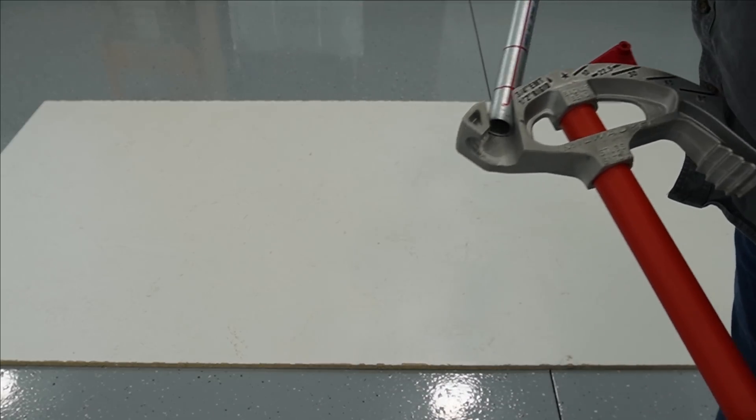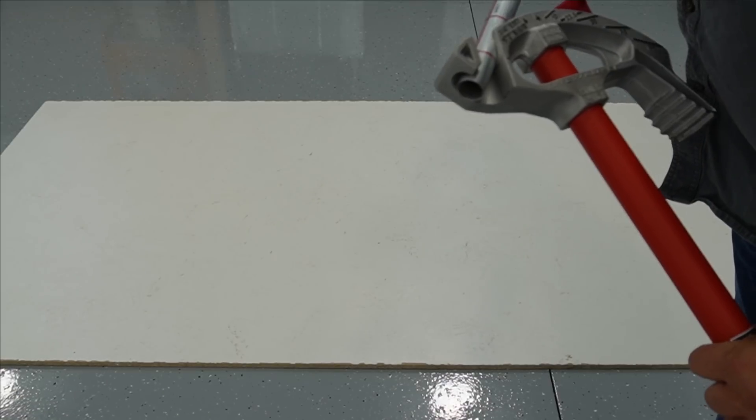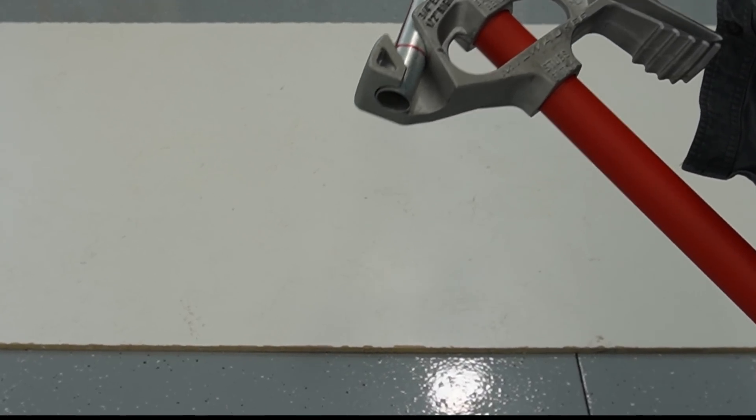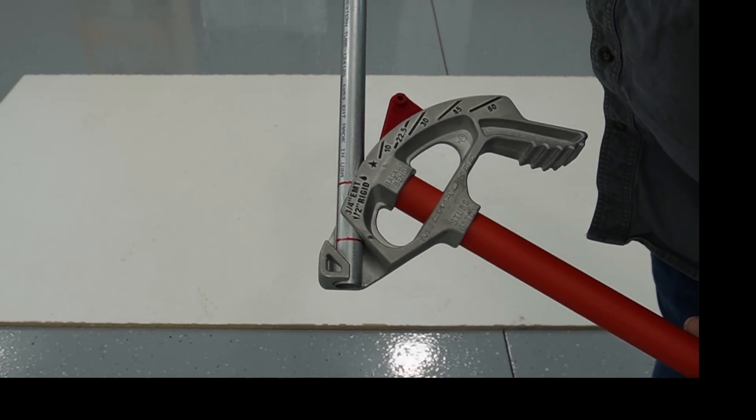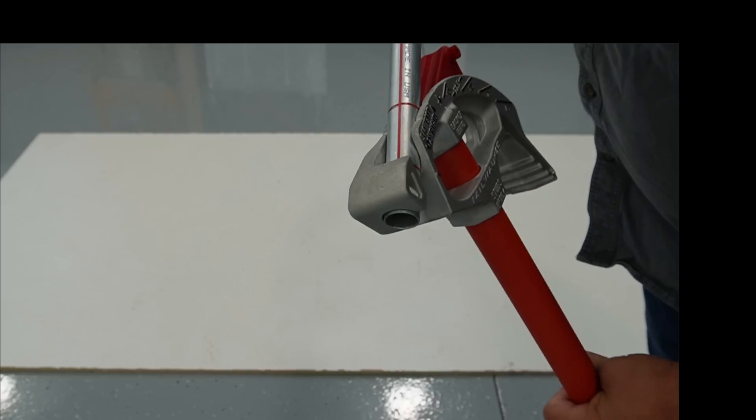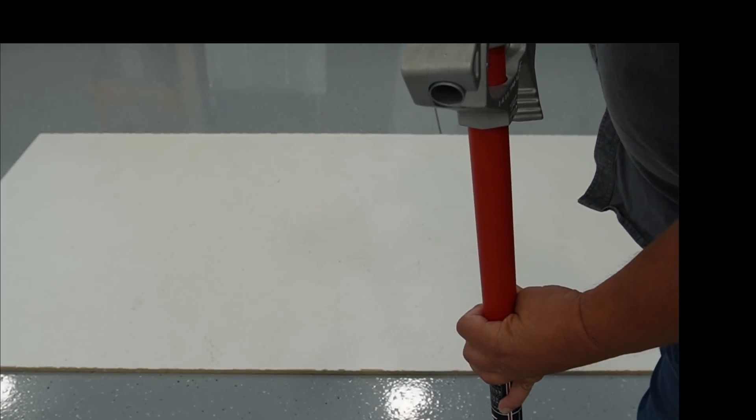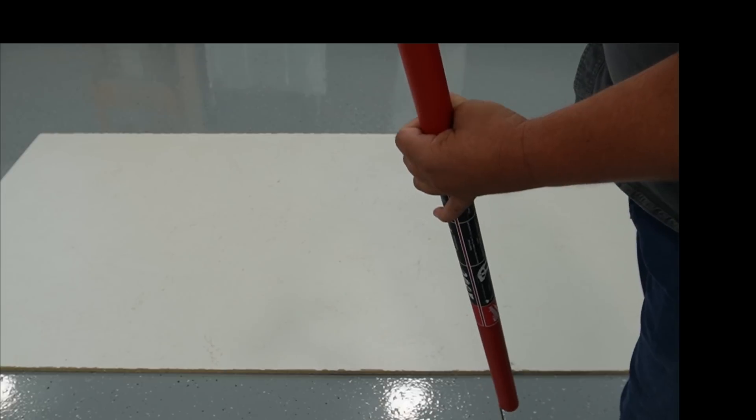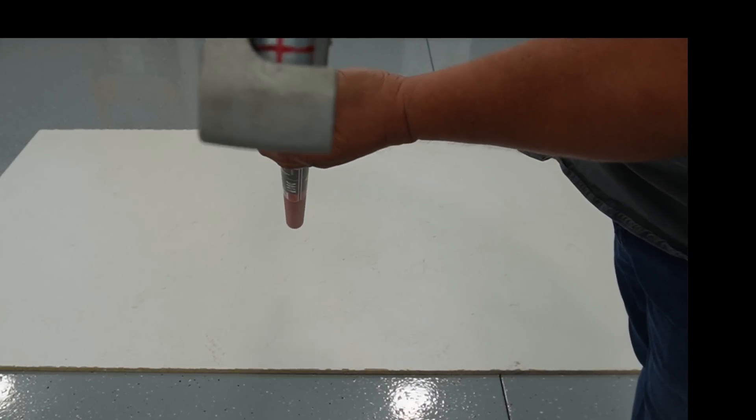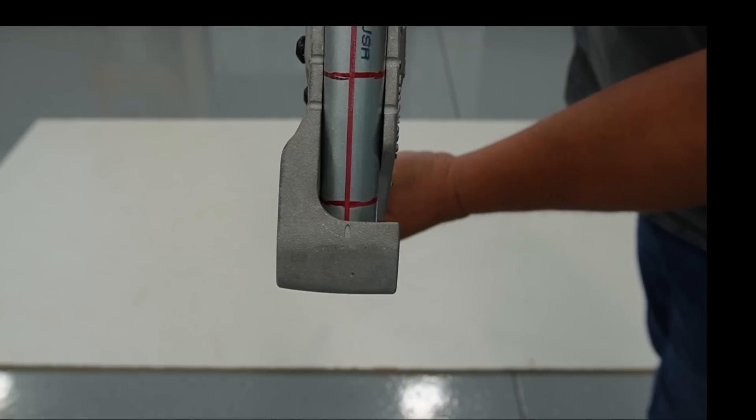Okay, so now I'm going to load the pipe into the bender and you can see that I place that first mark aligned with the mark on the bender, and then I rotate the pipe conduit to the mark on the end of the bender that shows center.